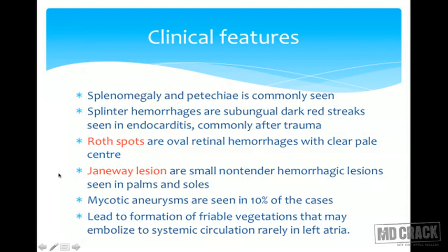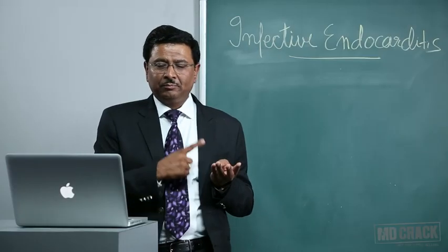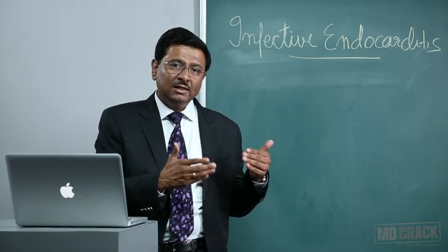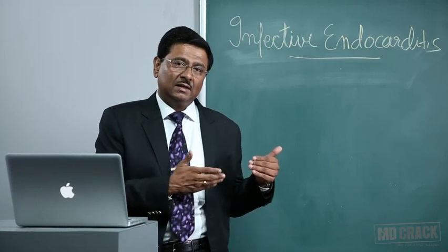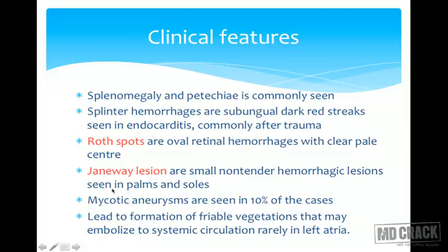Janeway lesions are small, non-tender hemorrhagic lesions seen in the palms and soles. To summarize: Osler nodes, Roth spots, and Janeway lesions are all seen in infective endocarditis and are important from an MCQ perspective.